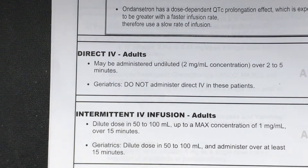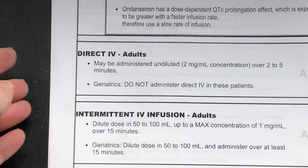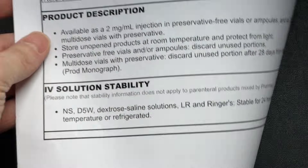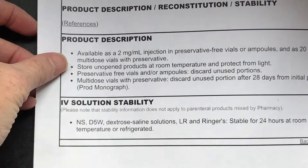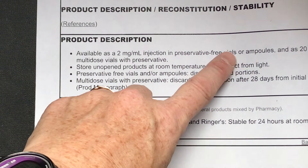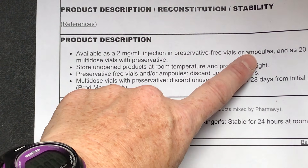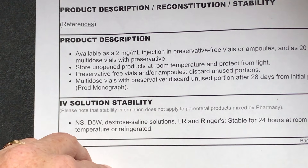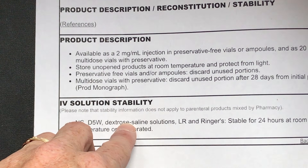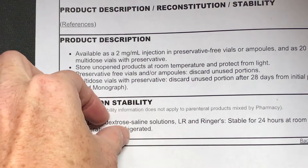If you've never given ondansetron before, you need to know what it looks like and where to find it — that information is also in the parenteral manual. Under product description, it's available as a 2 milligram per mil injection in a vial or ampoule. It doesn't have to be in a fridge; it can be at room temperature, so it's probably just sitting on the counter somewhere.